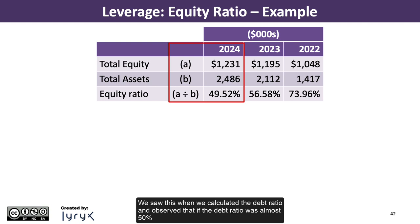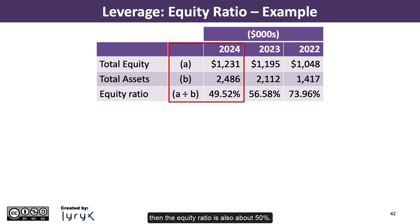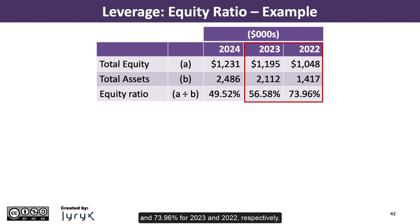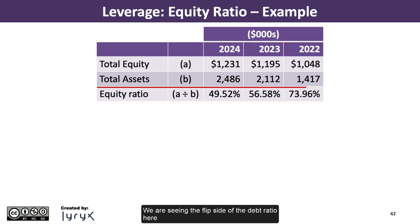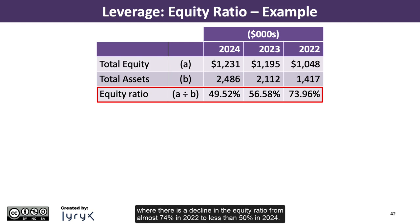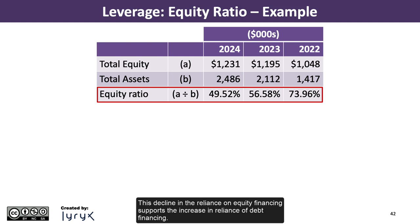We can interpret this to mean that each dollar worth of assets is financed by 49.52 cents in equity. We observed that if the debt ratio was almost 50%, then the equity ratio is also about 50%. The total equity ratios are 56.58% and 73.96% for 2023 and 2022, respectively. We are seeing the flip side of the debt ratio — a decline in the equity ratio from almost 74% in 2022 to less than 50% in 2024, which supports the increase in reliance on debt financing.